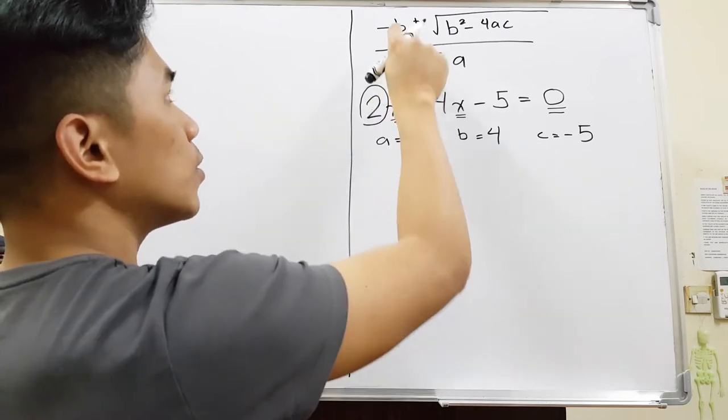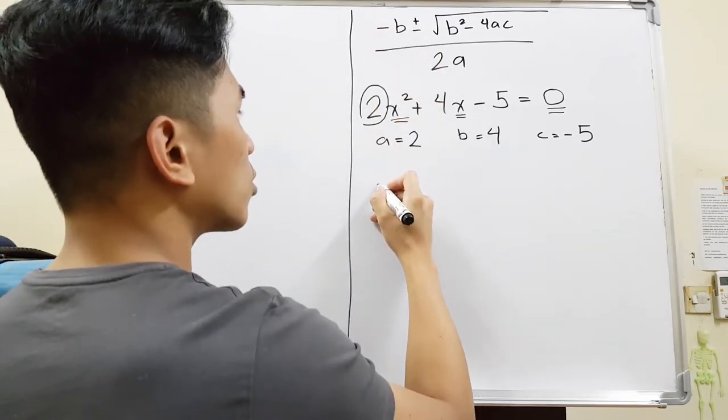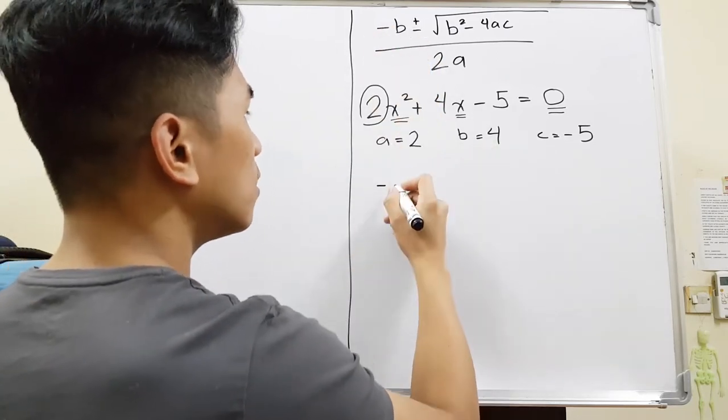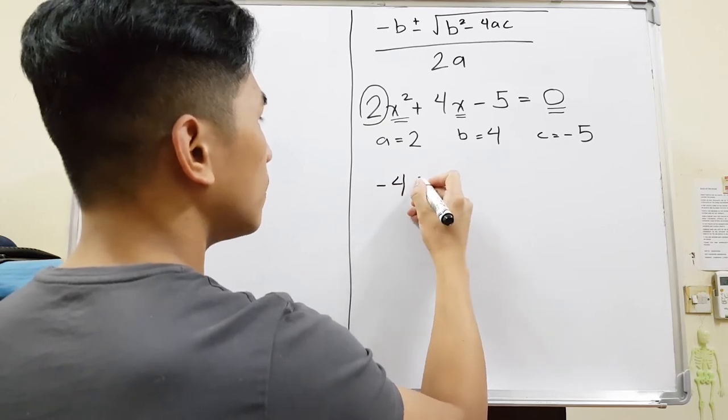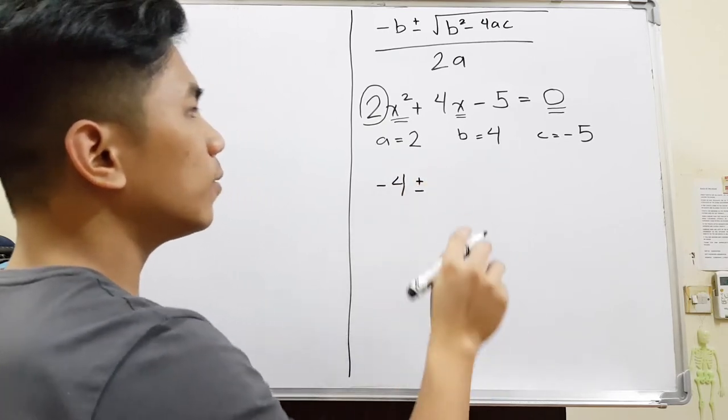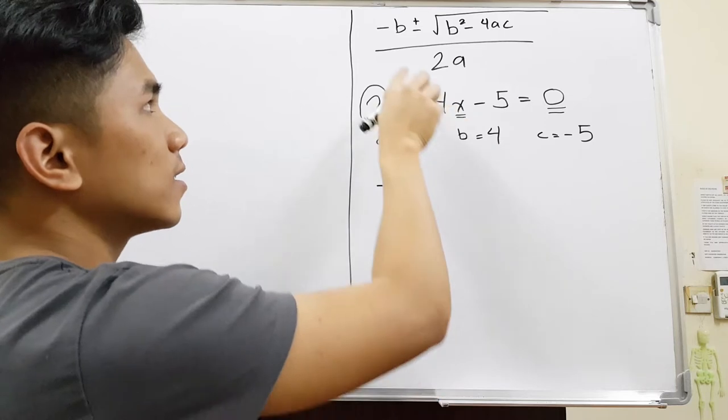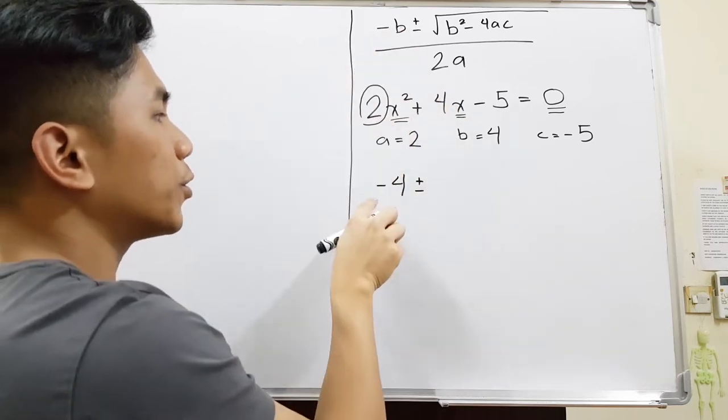Next, all you have to do is put it in our formula. So negative B, B is 4, so negative 4. Plus and minus. Just take note, for example your B is negative. Since we have a negative here, it will turn into a positive.